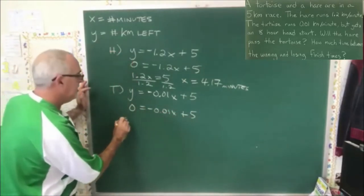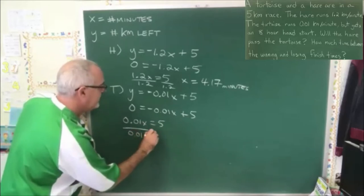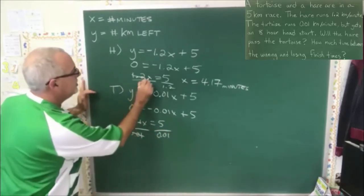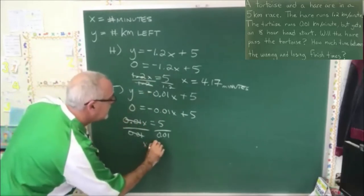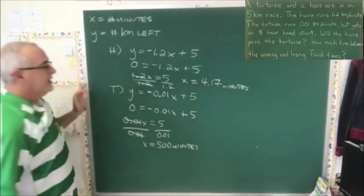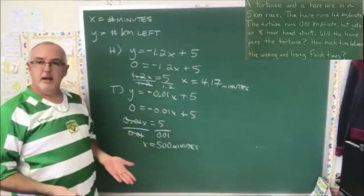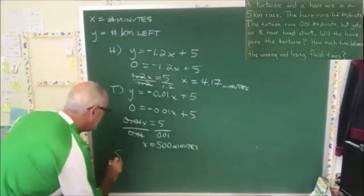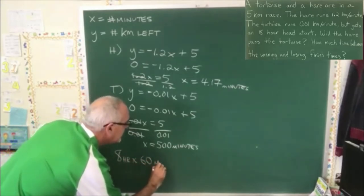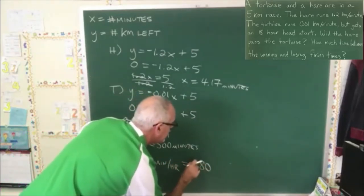Let's do the same thing with the tortoise. I'll move the negative 0.01x to the other side where it becomes positive, and divide both sides by 0.01. These cancel, x is equal to 500. It takes the tortoise 500 minutes to run the race. But he has an 8-hour head start — we have to calculate that. 8 hours times 60 minutes in an hour is equal to 480 minutes. So that means the tortoise runs for 480 minutes before the hare starts.